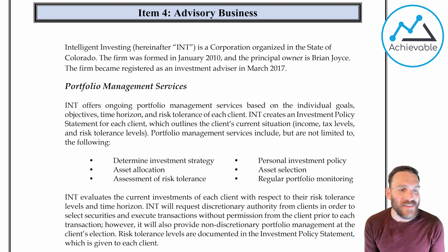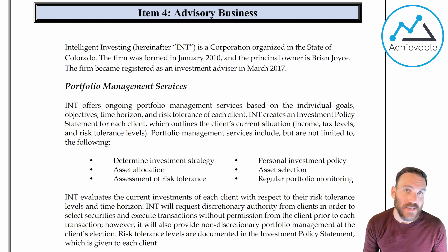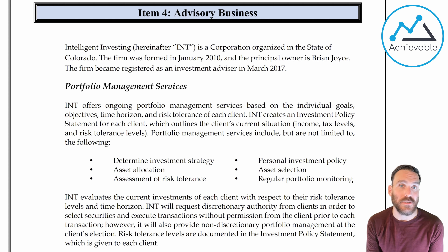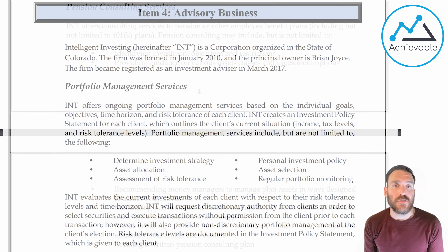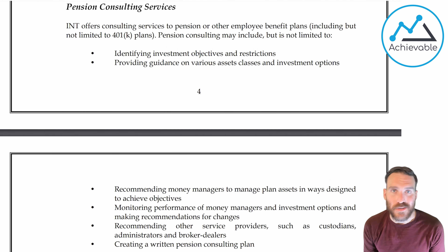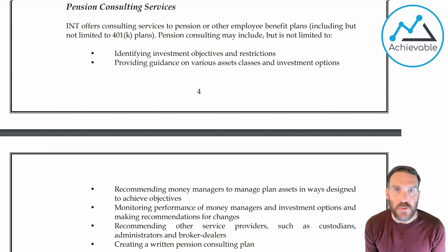The next page covers the advisory business, which goes into what Intelligent Investing offers their clients. You can see the bullet points: they help you determine investment strategy, asset allocation, assessment of risk tolerance, personal investment policy — which helps determine what recommendations they'll make based on your situation — asset selection, and regular portfolio monitoring. The advisor also offers pension consulting services for organizations that need help investing money to pay retirees. They also do general financial planning.